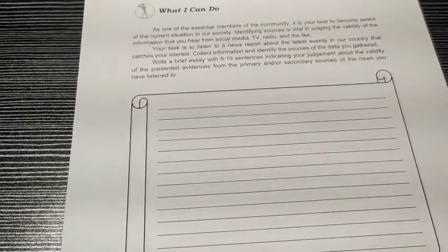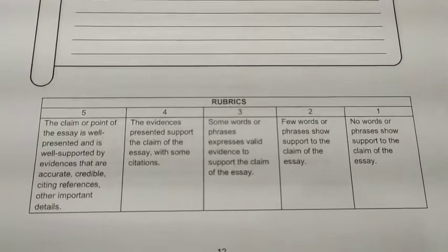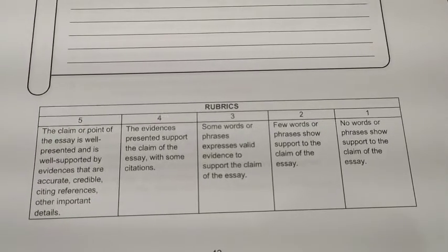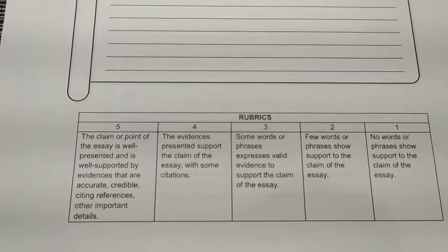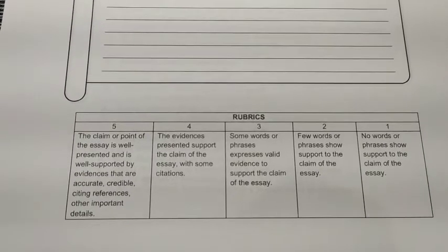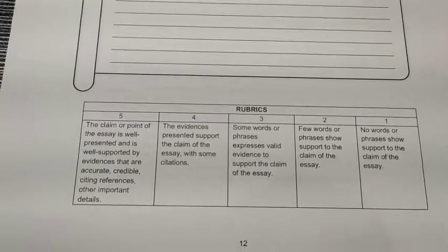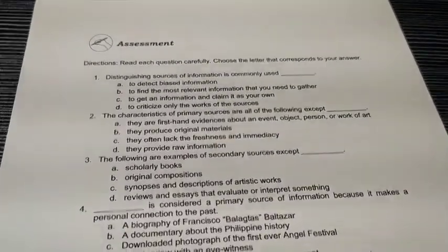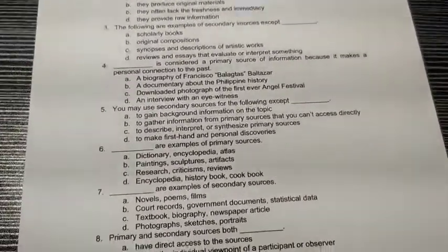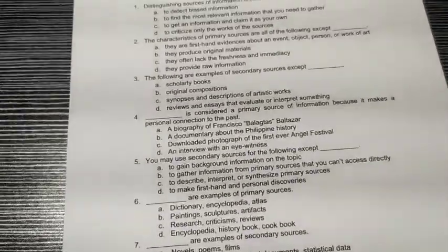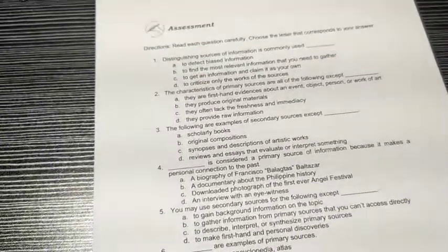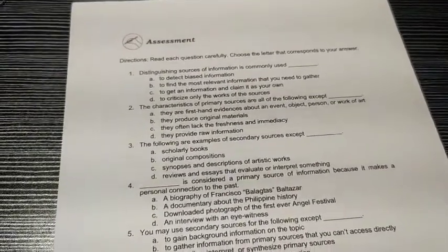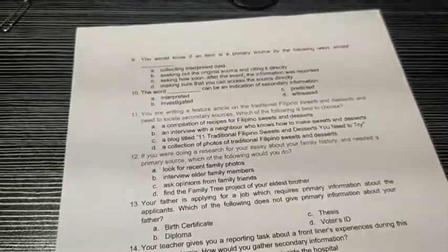This task will fall under your performance task. The rubric states that if the claim and point of the essay are well-presented, well-supported with evidence, accurate, and credible, you will get five points. For the assessment, choose among the letter choices A, B, C, or D. Read each statement in each number and identify the idea being described in each item.